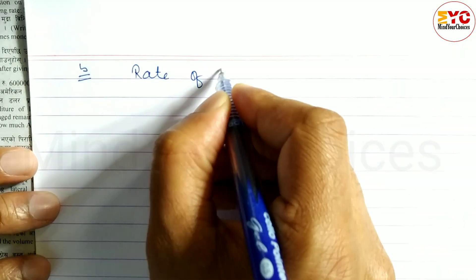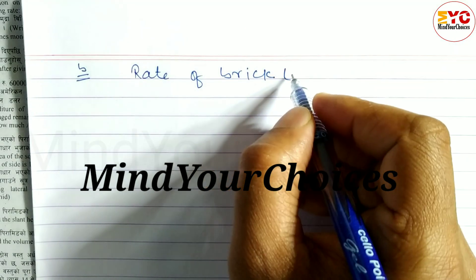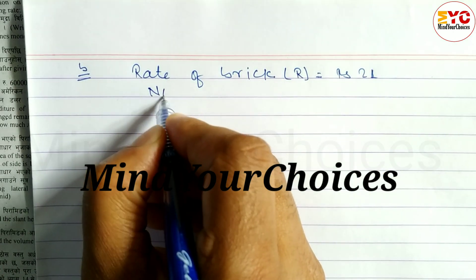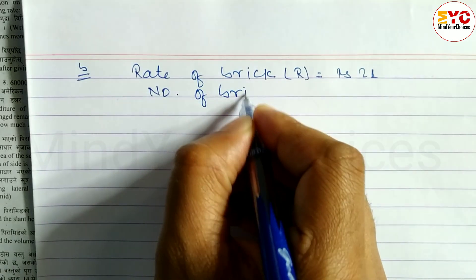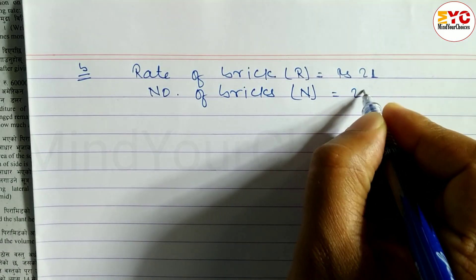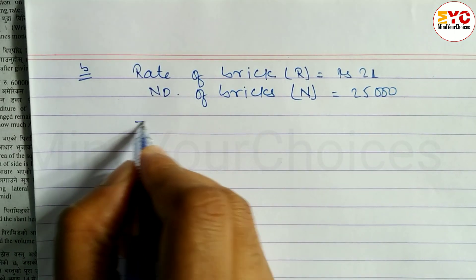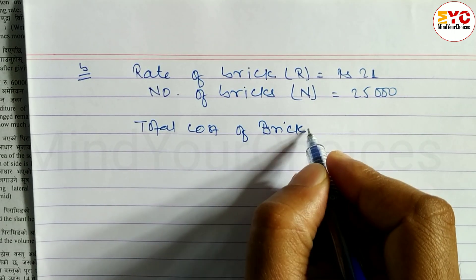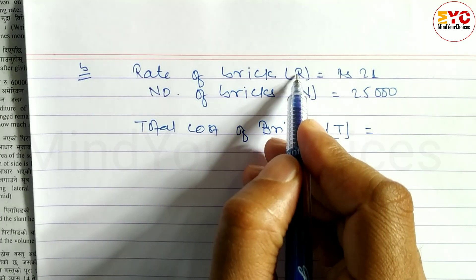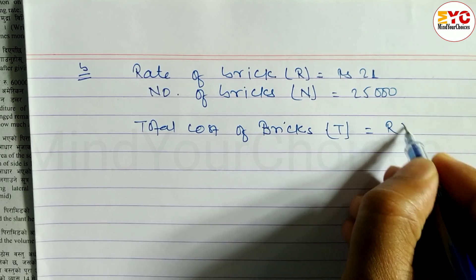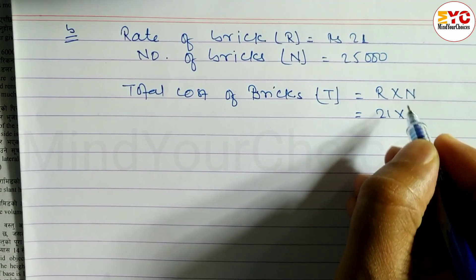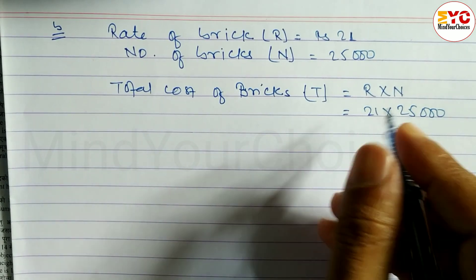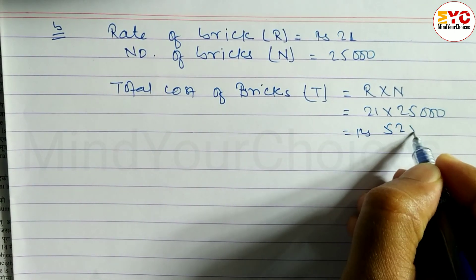Rate of brick C = Rs. 21. Total number of bricks N = 25,000. Total cost of bricks = C × N = 21 × 25,000, which equals Rs. 5,25,000.